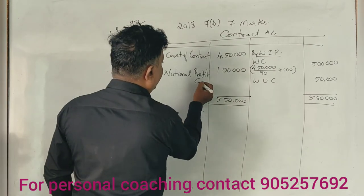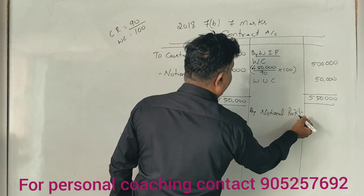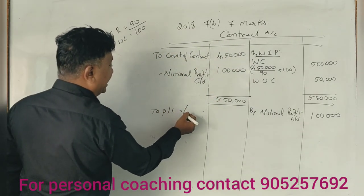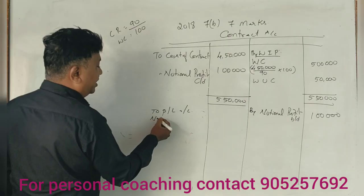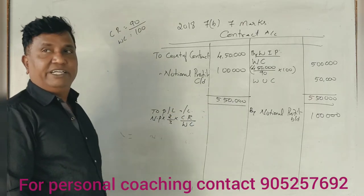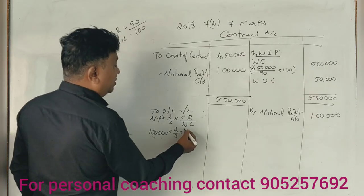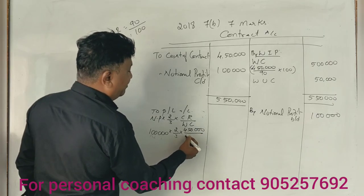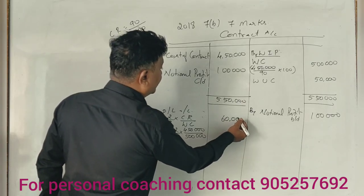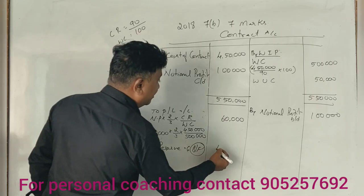Notional profit carried down equals notional profit brought down — that is 1 lakh. Profit and Loss account transfer equals: notional profit × 2/3 × (cash received ÷ work certified). That is: 1 lakh × 2/3 × (4,50,000 ÷ 5,00,000) = 60,000. Reserve is the balancing figure: 40,000.